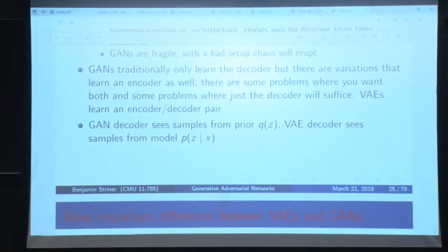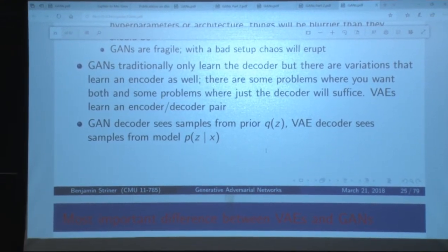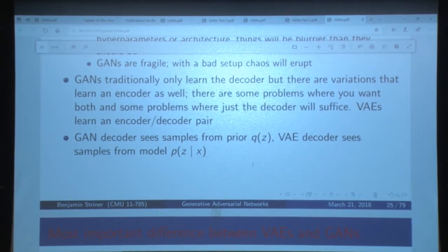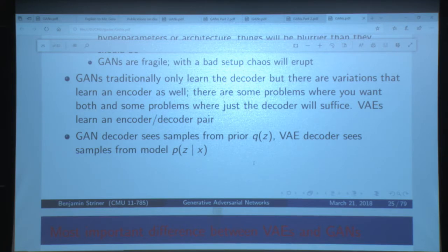The real difference of why GANs are sharper than VAEs: when training your GAN generator, the inputs are samples directly from your prior — actually sampled from your prior. Versus the VAE, the inputs are your encoded data, which you're saying should try to match your prior but it's not going to be exactly your prior. So your GAN is trained to generate from exactly the prior versus the VAE is trained to generate from encoded data that is regularized to look like your prior. That's one reason why the GAN generator might ultimately produce better results.